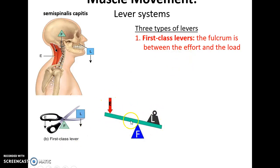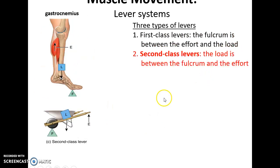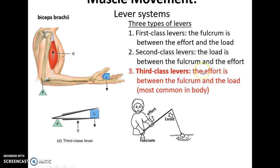First-class lever systems work like a seesaw and can be either mechanical advantage or disadvantage. Second-class lever systems, such as the gastrocnemius attaching to the calcaneus bone causing movement where the tibia contacts the talus at the ankle, are always a mechanical advantage — a wheelbarrow is another example. The third-class lever system is the most common, where the muscle attachment is between the fulcrum and the load, such as in fishing, and is always a mechanical disadvantage. The body chooses this because it allows for a larger range of motion and quicker response.